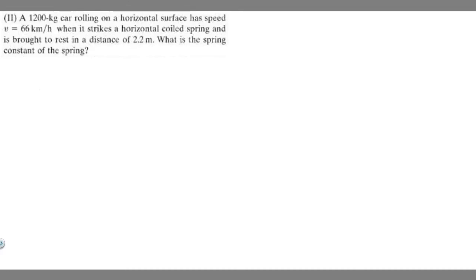In this problem, we're told a 1200 kilogram car rolling on a horizontal surface has a speed of 66 kilometers per hour when it strikes a horizontal coiled spring and is brought to rest in a distance of 2.2 meters. What is the spring constant of the spring?